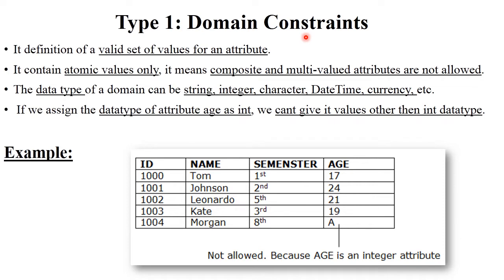The first type is domain constraints. Domain constraints basically means you can only enter valid data or a valid set of attributes in your table. For example, in a table with id, name, semester, and age columns, you can apply a constraint on the age column because age should only be entered in integer format. If you enter a character value in the age column, it generates an error, because age has an integer data type and you can't enter a string or character value into that column. This is called domain constraints — while making a registration form or login/sign-up form in real life, you can apply these constraints.